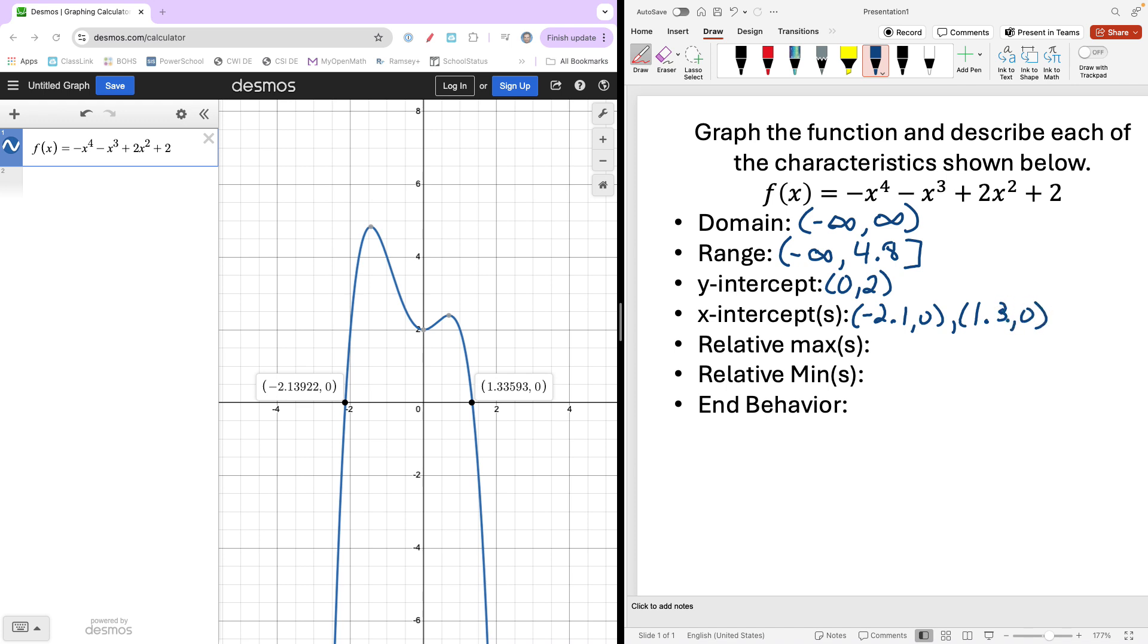And relative maxes. Anywhere that the function turns, we get relative extrema. Maxes or mins. In this case, notice we have two relative maxes. Let's list those out and just list them as coordinates.